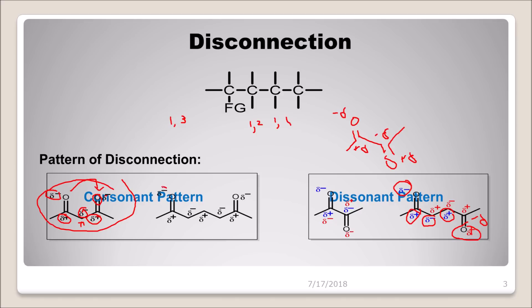For 1,5-diketones: assigning charges alternately — negative, positive, negative, positive, negative — the second oxygen ends up with a delta-negative charge, consistent with electronegativity. So 1,5-diketones show a consonant pattern. This is the basic foundation of retrosynthesis. Initially you might struggle with it, but once you get the hang of it, it is very interesting. I hope you found this video useful — thank you so much for watching.